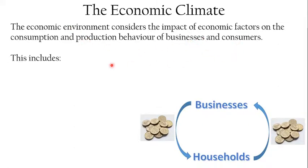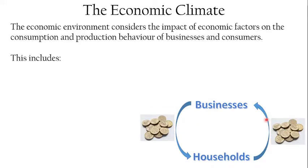Businesses in the economy produce things; consumers in the economy consume things. There's a flow of money from households to businesses — households give businesses money when they consume goods and services. Businesses also give households money because households sell businesses their labor. People go out to work and are effectively selling their time and energy, producing the products that businesses sell, and in return they get paid a wage or salary.